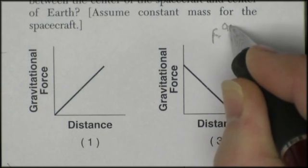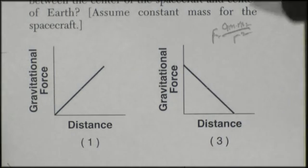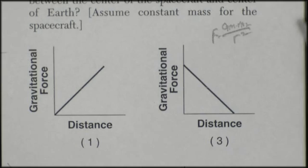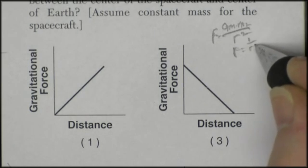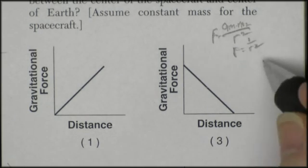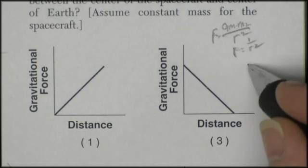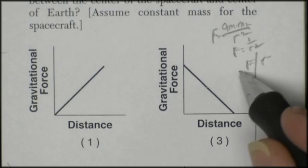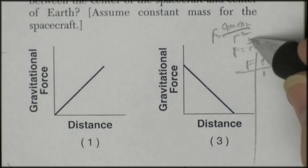F equals G M1 M2 over R squared. Now, this is a proportionality problem, so what I'm going to do is this. I'm just going to make up values for mass and mass and G. I'm just going to call them all 1s. So I'm going to say F is equal to 1 over R squared. As my distance goes up, I can put in pretend numbers. What's force and R? If I say R is 1,